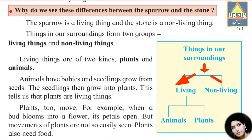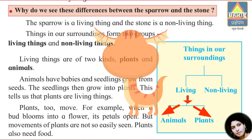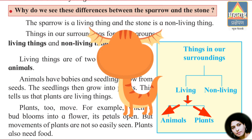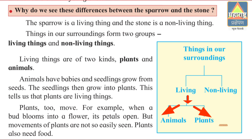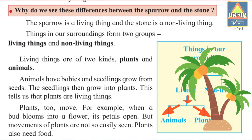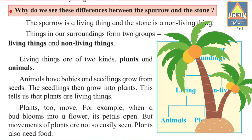Living things and non-living things. Living things are of two kinds: plants and animals. Animals have babies, and a seedling grows from seeds. The seedling then grows into a plant. This tells us that plants are living things.